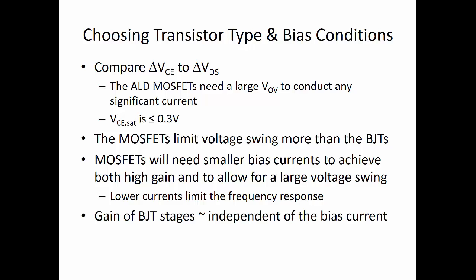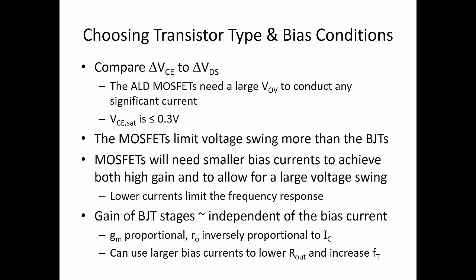On the other hand, the gain of the BJT stages is essentially independent of the bias current, as both the transconductance GM and the output resistance RO change linearly with the bias current. So, GMRO is constant. But, larger bias currents imply a lower output resistance and a larger FT.